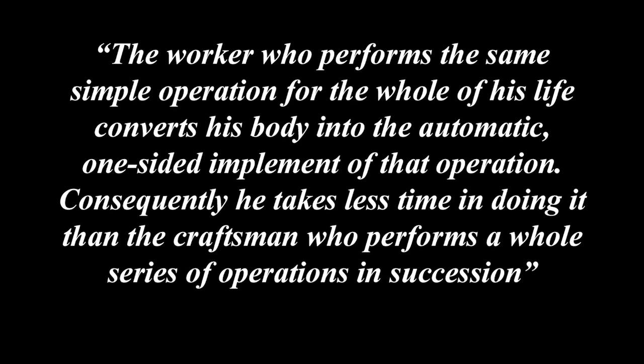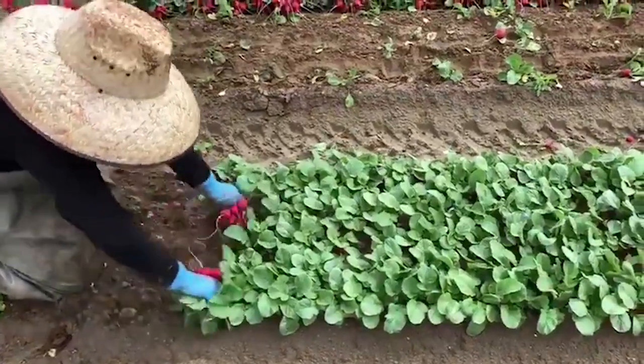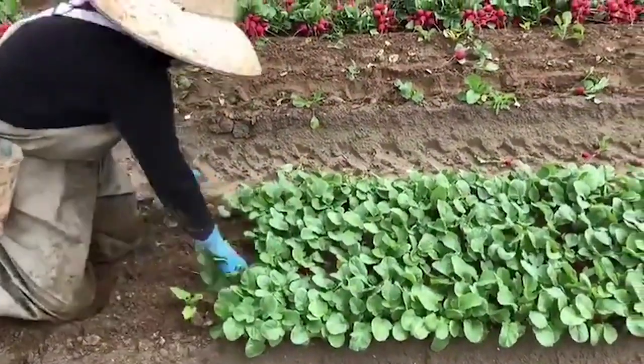The worker who performs the same simple operation for the whole of his life converts his body into the automatic, one-sided implement of that operation, and consequently takes less time in doing it than a craftsman who performs a whole series of operations in succession. Now that workers have been separated into single individual functions, repeating the same labour process over and over, the skill in this specific task becomes more proficient. This speed increases productivity, and the skills become passed down through generations from older workers to new ones, while the variety of skills once performed by a single labourer become forgotten.